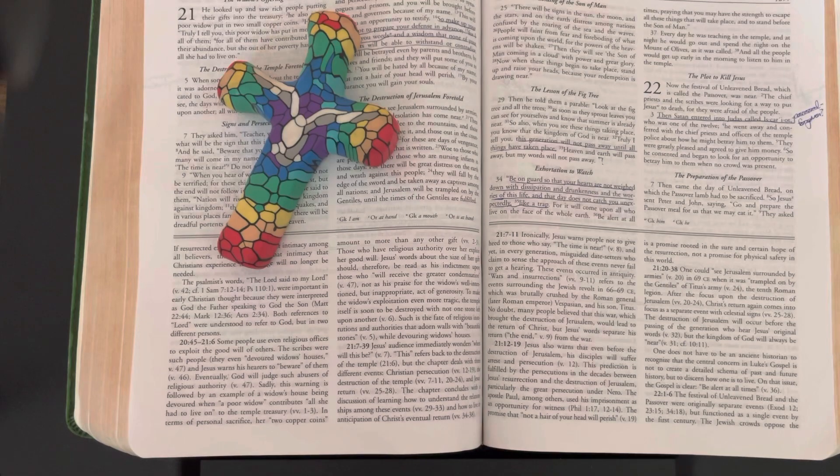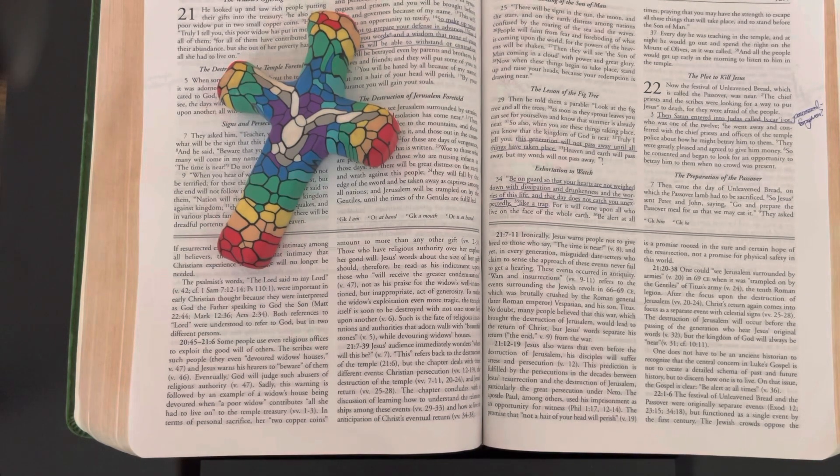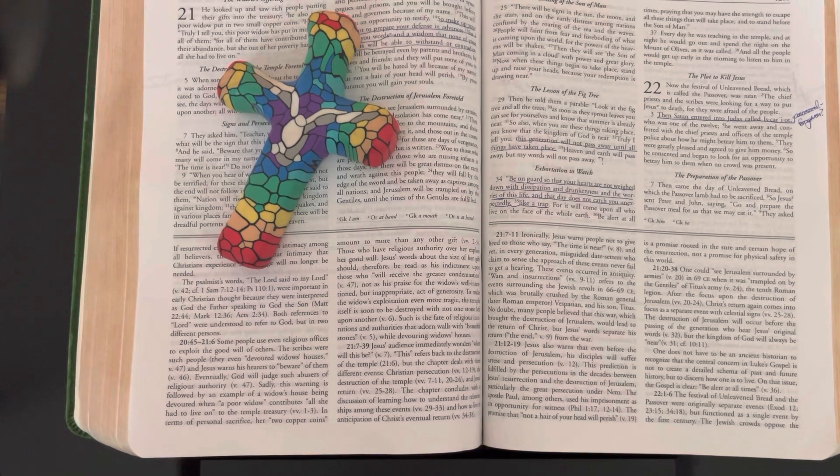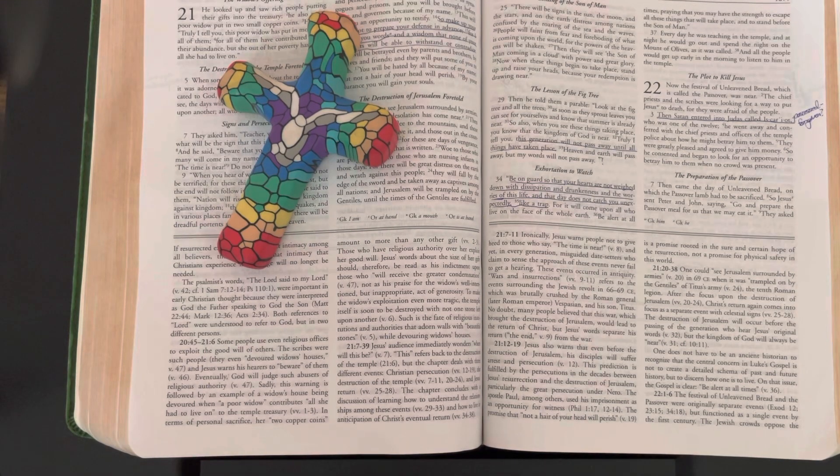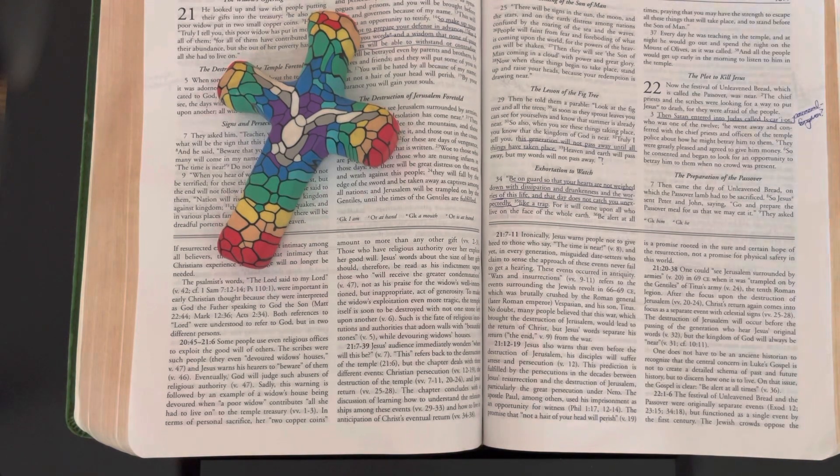They were greatly pleased and agreed to give him money. So he consented and began to look for an opportunity to betray him to them when no crowd was present.